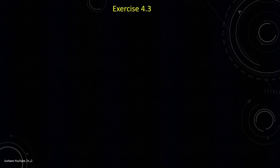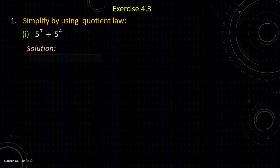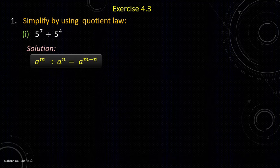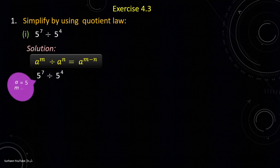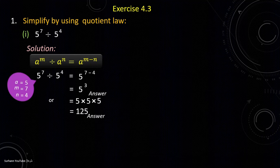Now let's start exercise 4.3. It says simplify by using the quotient law. Problem number 1: 5 to the power 7 is divided by 5 to the power 4. Here you may note that the bases are the same but the powers are different. We will use condition number one of the quotient law. Consider a equal to 5, m equal to 7, and n equal to 4. Put these values into the formula and simplify to get the answer: 5 to the power (7 minus 4) equals 5 to the power 3.